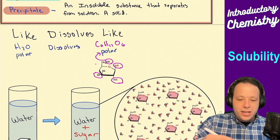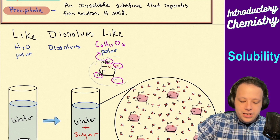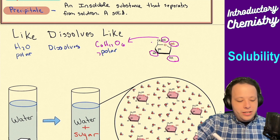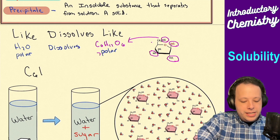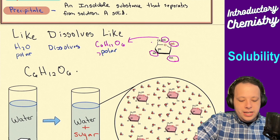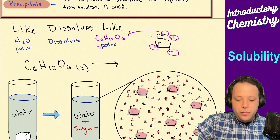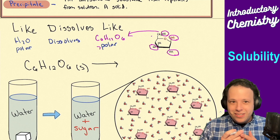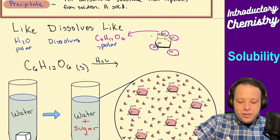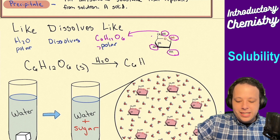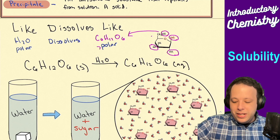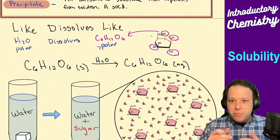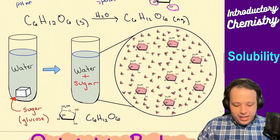We're going to write a solubility equation to show this. If I take C6H12O6 as a solid sugar cube added to water, will it dissociate and ionize? No — it's not made of ionic materials. Instead, it's going to be C6H12O6(aq), meaning it dissolved. It's still a homogeneous mixture, but it didn't actually break apart and ionize.